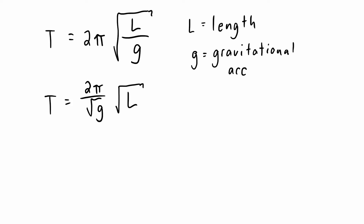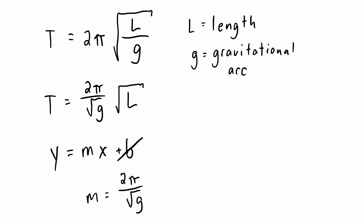Now how do we plot this? You're used to seeing something like y = mx + b for a linear equation. In this problem we don't have any b, so we ignore that. Therefore we have y = mx. For our simple pendulum, m is 2π divided by the square root of g, and x is the square root of L. So I need to plot the period T as my y and the square root of L as my x. The slope should come out to be 2π divided by the square root of g.